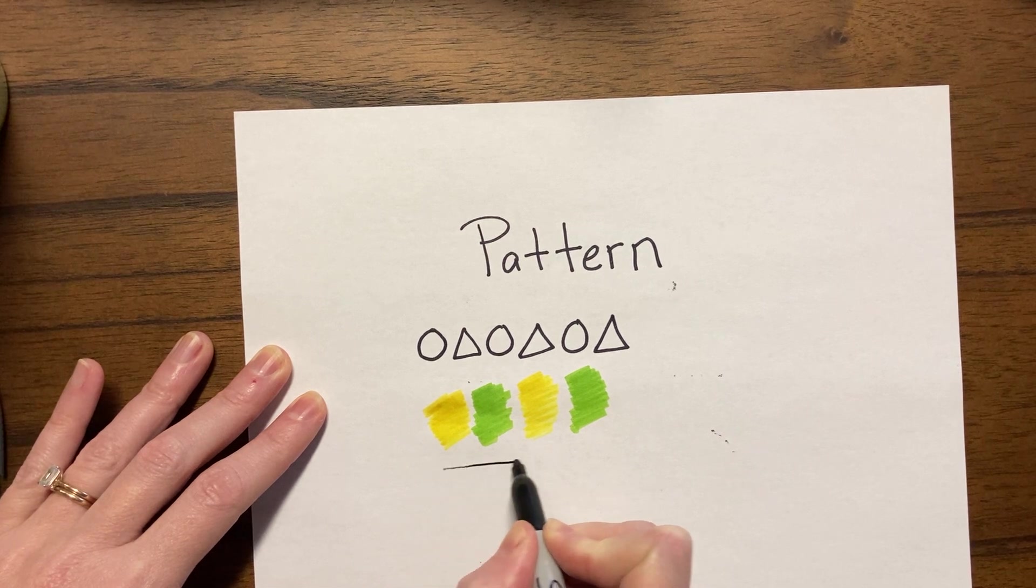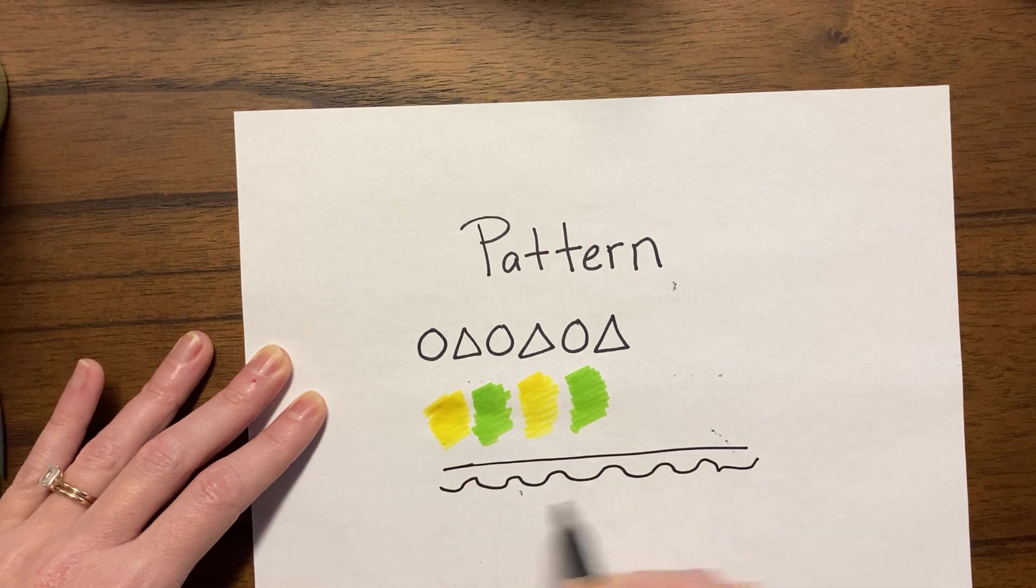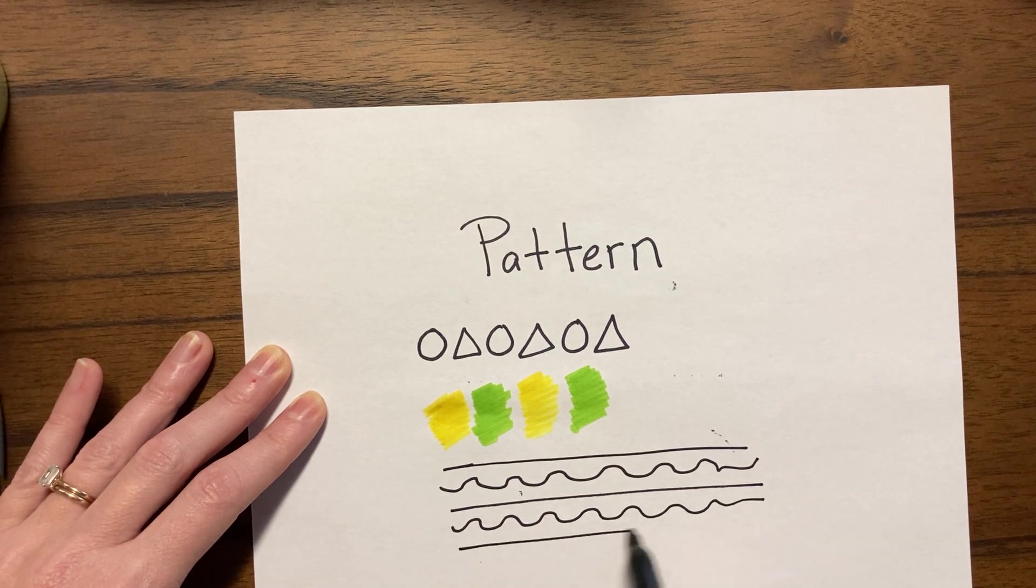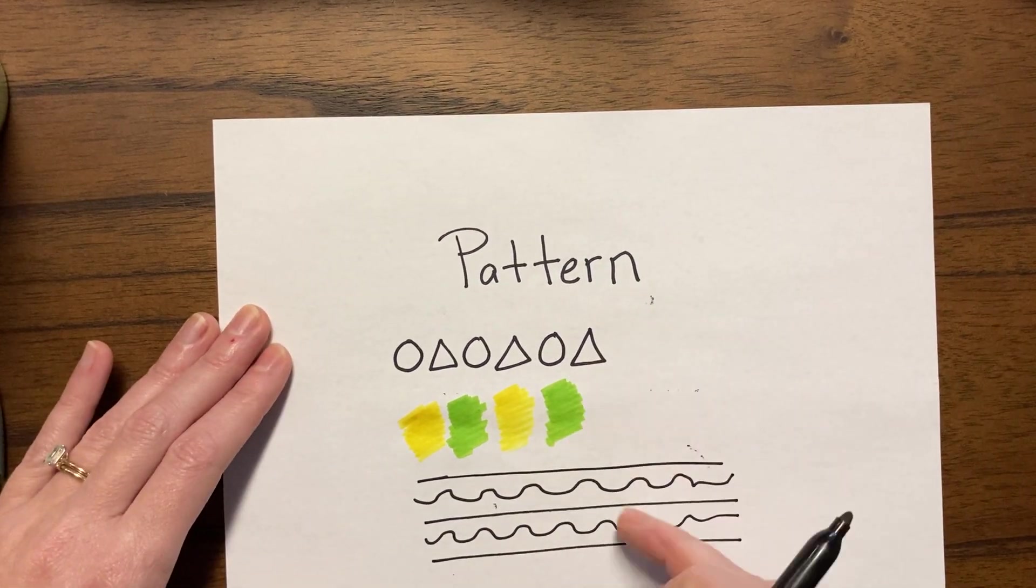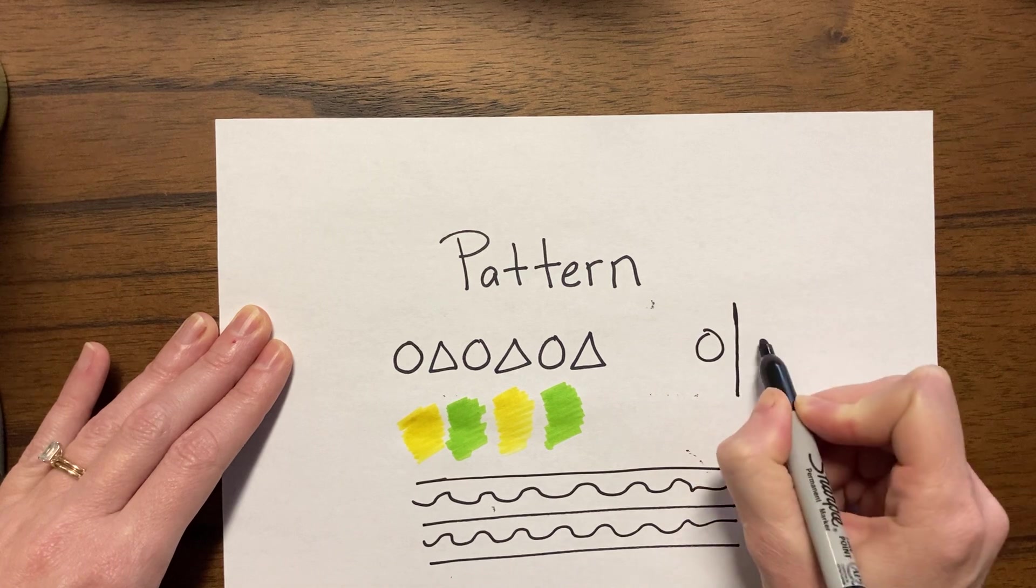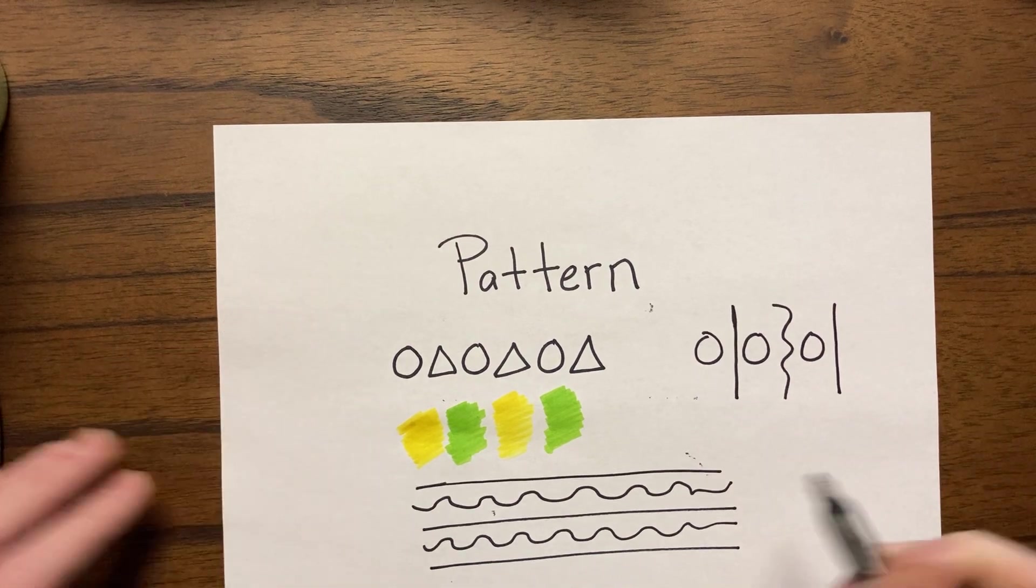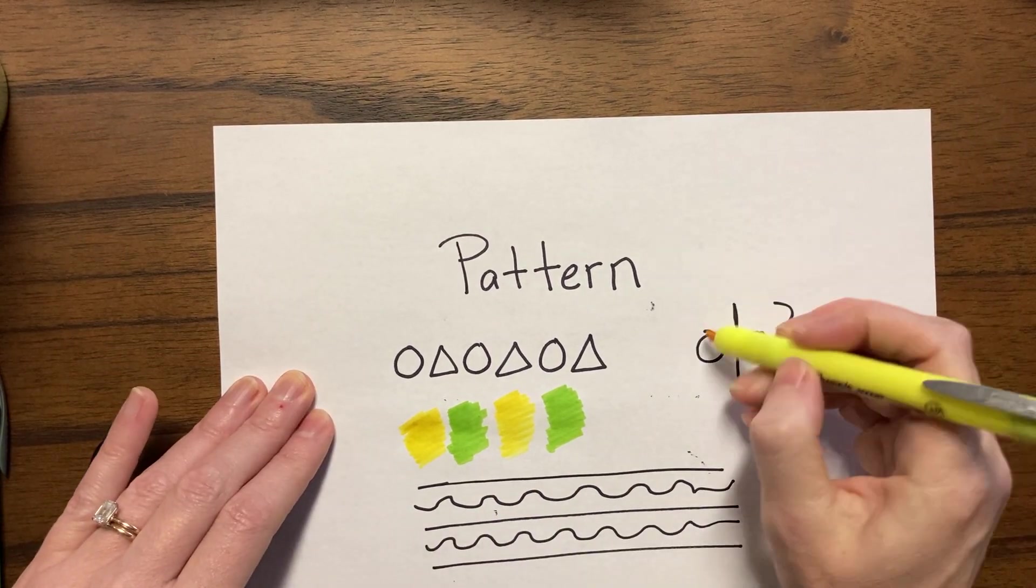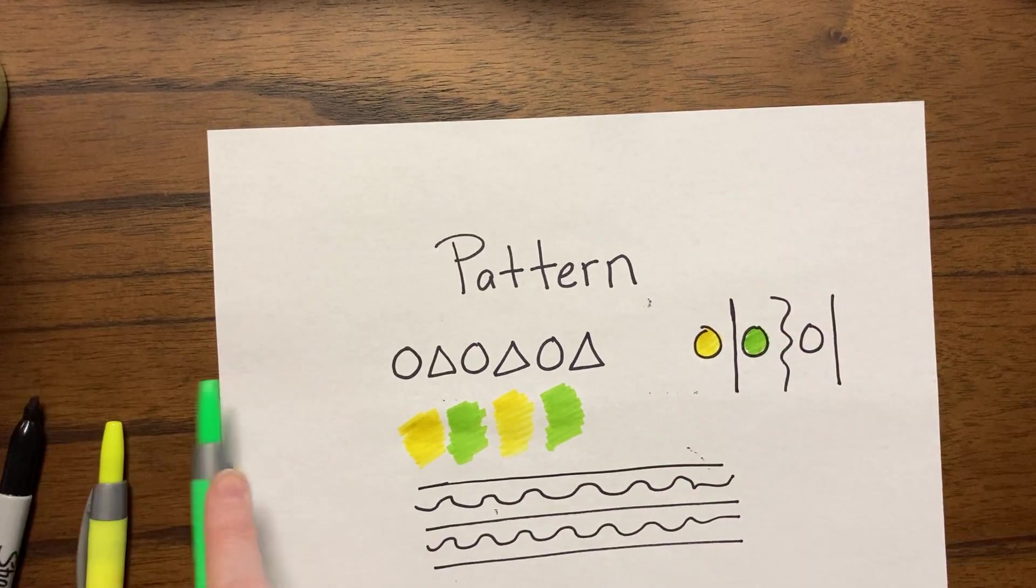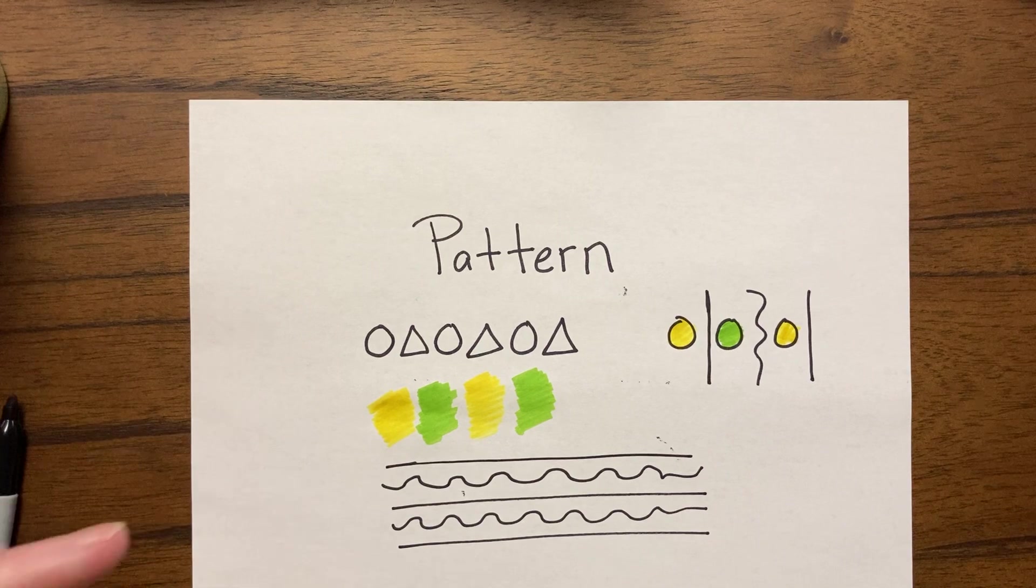Or actually doing different kind of lines. So if I did straight, wavy, straight, wavy, straight, wavy, that would create a pattern too. Now a pattern can combine all of these. You could somehow combine all of them to make a pattern.